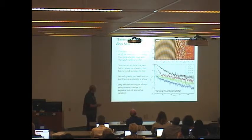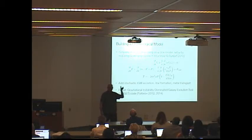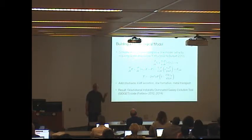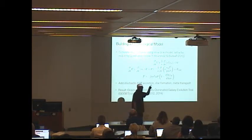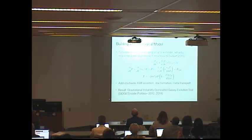We can also move metals around with thermal instability, but I want to talk about how we can put this into a cosmological model — this is John Forbes' work. We now have some rules: the disk asymptotes to Q of 1 and holds itself there via gravitational instability. You can then make a very simple 1D code where you enforce that — an alpha disk where instead of alpha being arbitrary, you choose it to enforce Q stays at 1, then run a simulation over a cosmological timescale with stochastic IGM accretion, star formation, and metal transport. We call this code the Gravitational Instability-Dominated Galaxy Evolution Tool, or GIDGET.